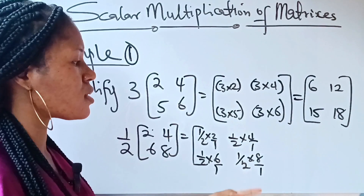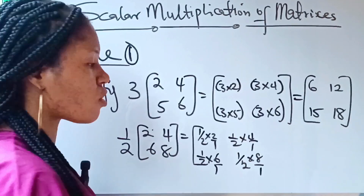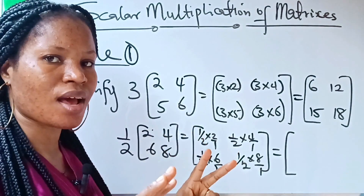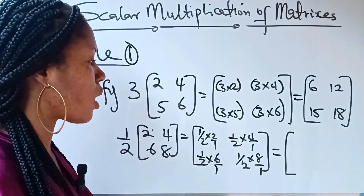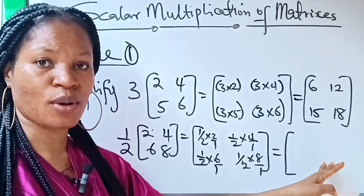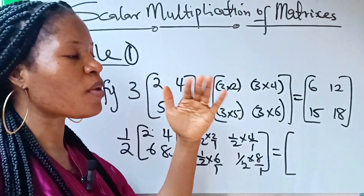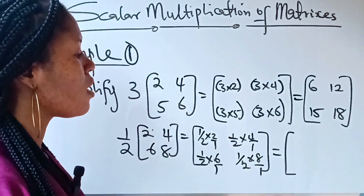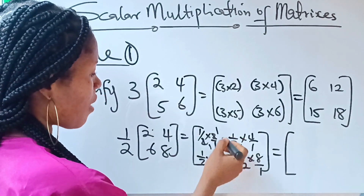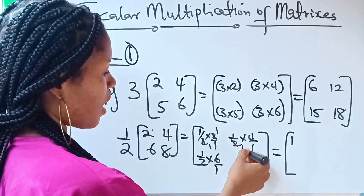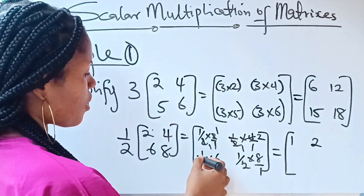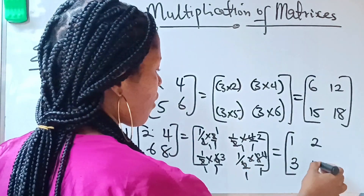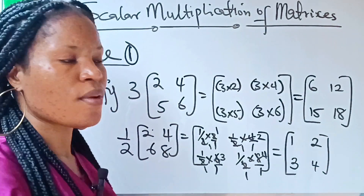You can write each as a fraction over one to balance it. Now, please stick with me because after this we are going into multiplication of two matrices together. If you've followed me to this level, please hit the subscription button and notification bell so you'll be notified when I upload new videos. So: 2÷2 = 1, 4÷2 = 2, 6÷2 = 3, and 8÷2 = 4. Our solution is the matrix [1, 2; 3, 4].